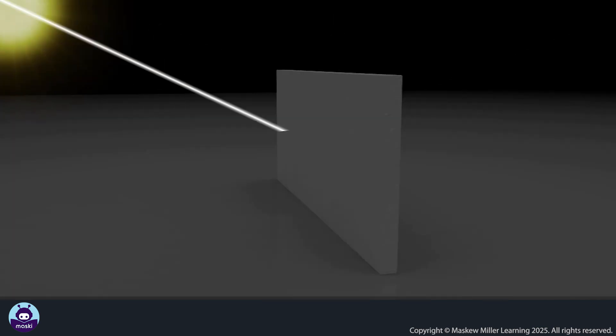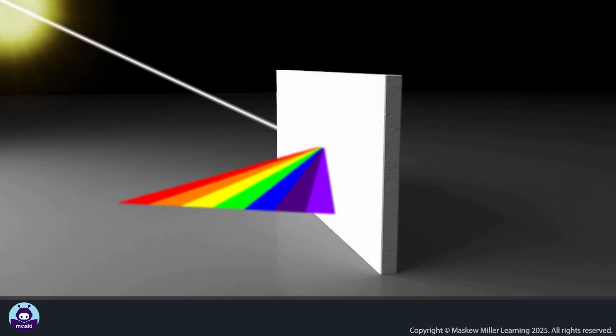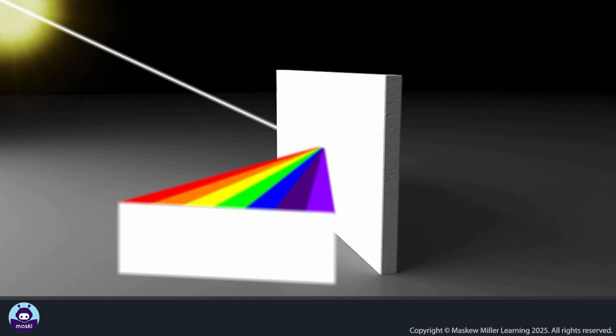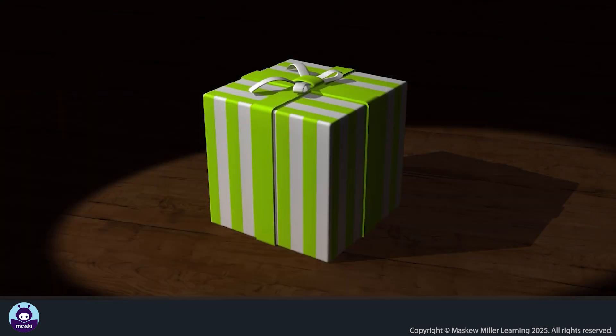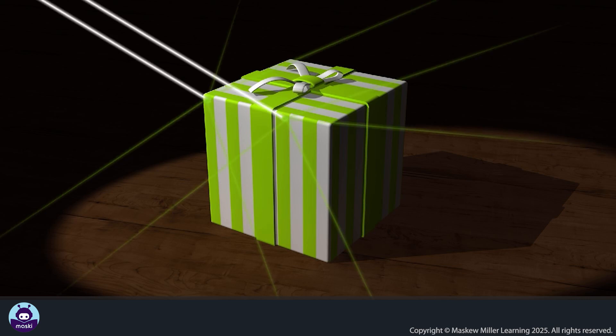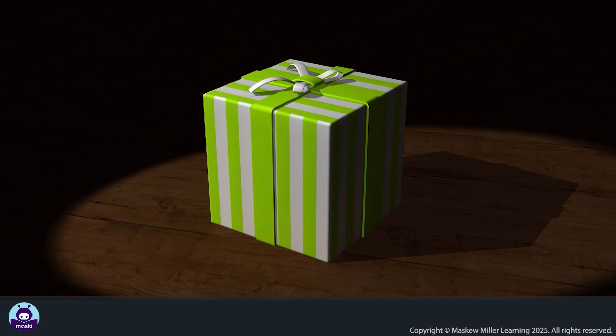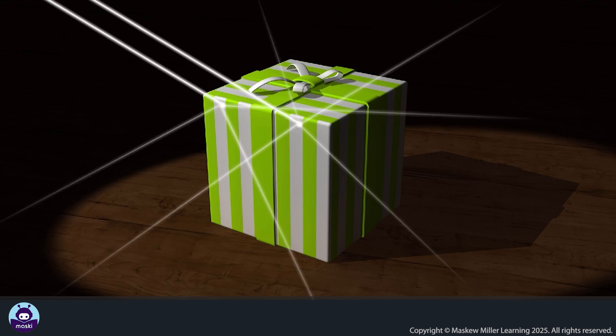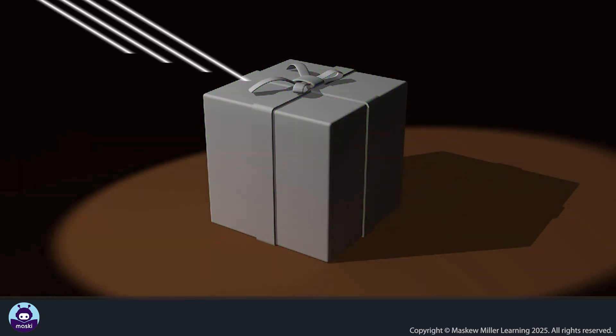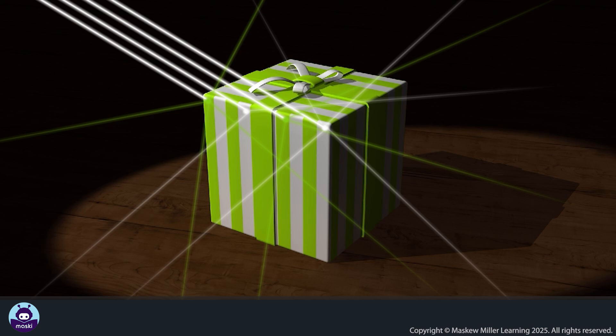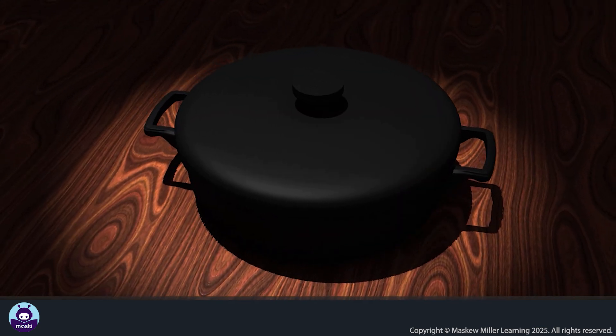A white object, such as a white wall, reflects almost all the light that strikes it. In sunlight, all frequencies of the visible spectrum are reflected to our eyes, and we see the combination of all colors as white. Green and white striped gift wrapping paper has two regions: the green regions reflect only green light and absorb all other colors, while the white regions reflect all colors of light.